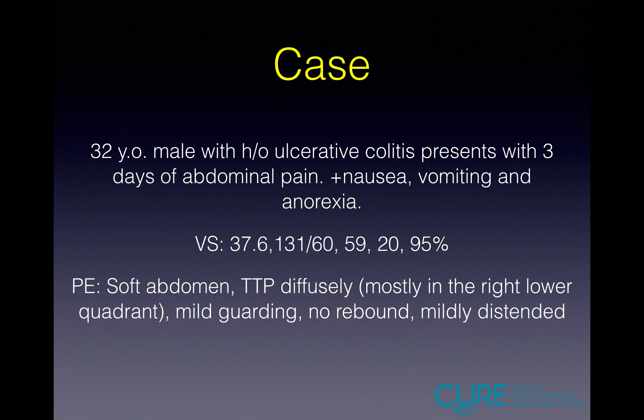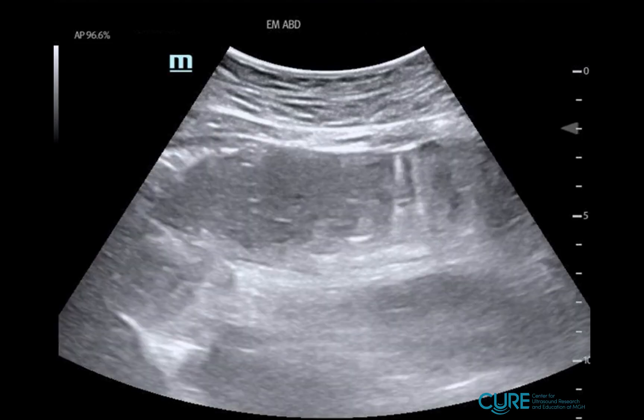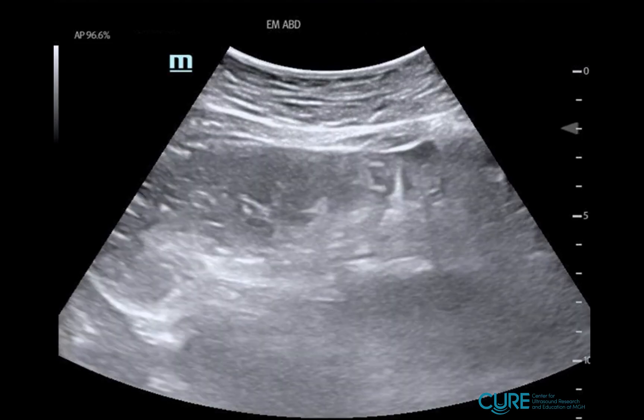We looked in the right upper quadrant looking for gallstone pathology — that was normal. We looked at the kidneys; there was no hydro. So at this point, we went to the lower abdominal quadrants, and this is what we found.